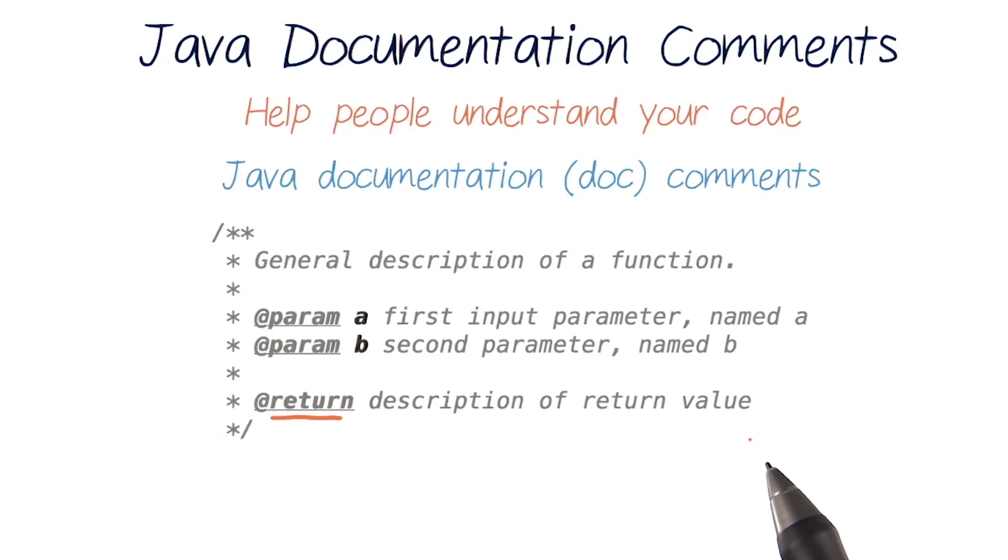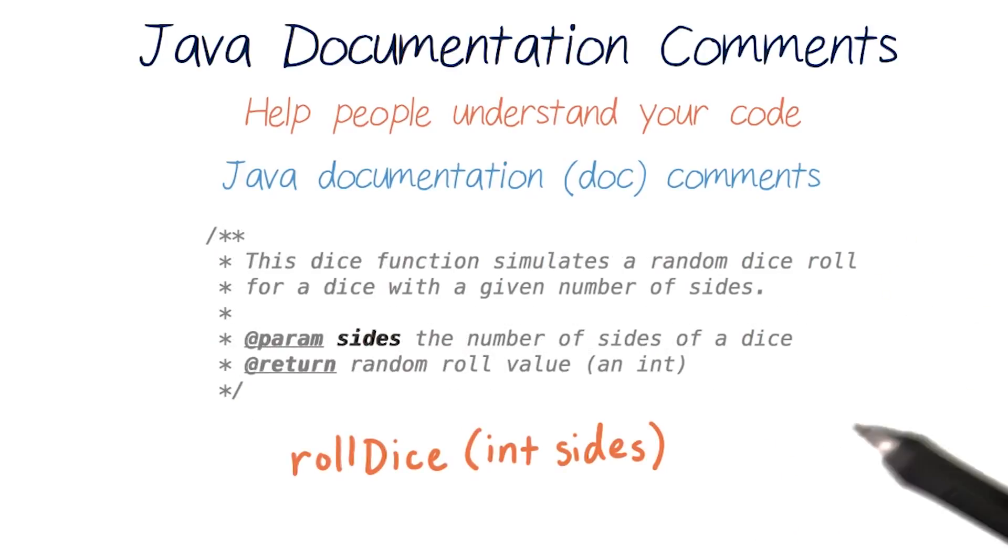Let's see an example. Here's a sample Java comment for our earlier rollDice function. If you remember, this function was called rollDice and it returned a randomly generated dice roll. It also took in the number of sides that a dice had to generate the correct range for that dice roll.